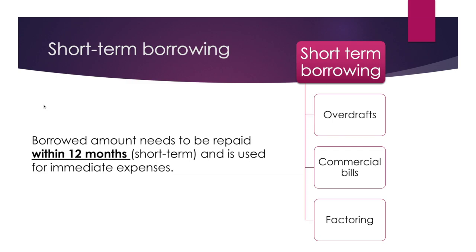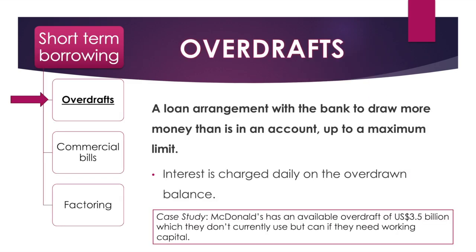You're using short-term borrowing for your immediate expenses. If you know about the balance sheet, there's a section called current assets, and usually your short-term borrowing options are for things like your current assets or current liabilities — things like buying stock, paying back short-term debts, or paying off your credit card. Our three options for short-term borrowing through the syllabus are overdrafts, commercial bills, and factoring.